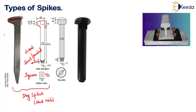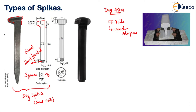Now where exactly do you use dog spikes? If you want to fix your flat-footed rail to your wooden sleepers, we use dog spikes, because they are cheap, they maintain better gauge, they are easily fixed onto your sleeper and can be easily removed from the sleeper. Normally for one sleeper, you will use four dog spikes. This is a sleeper, and the type of spike used here is a dog spike. So in order to fix this rail onto the sleeper, you are using four dog spikes per sleeper.